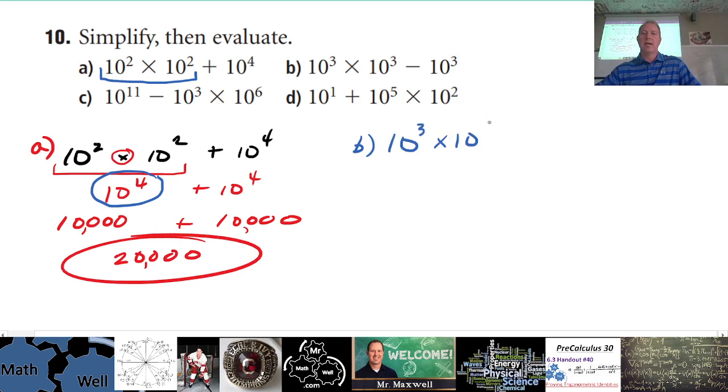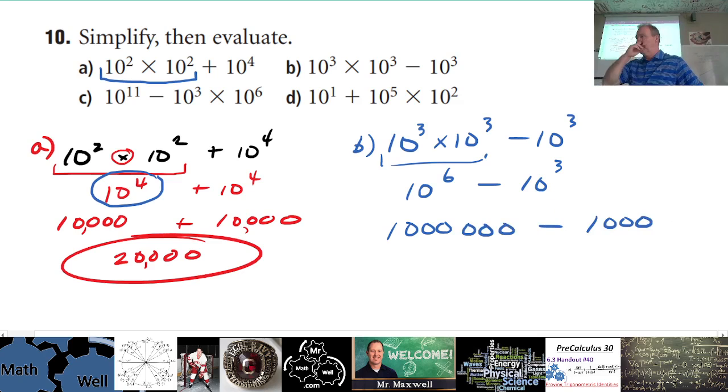If we take a look at B, it's similar: 10³ × 10³ - 10³. So that's going to be 10 to the power of 6 minus 10³. So that's 1 million minus 1,000.